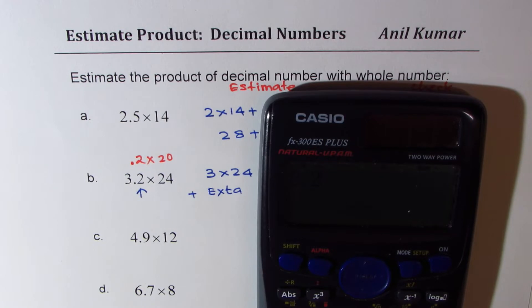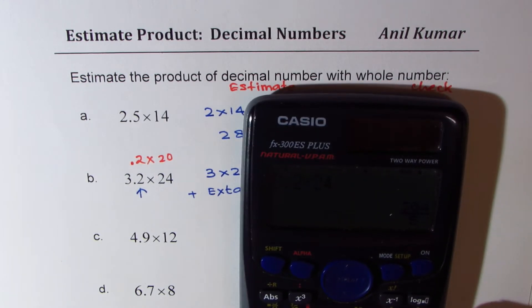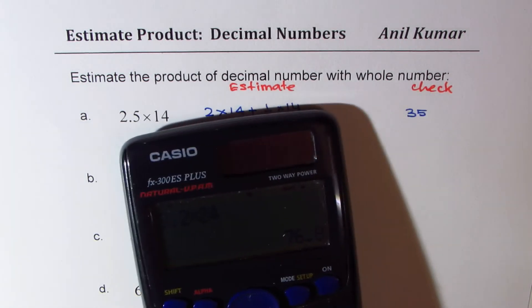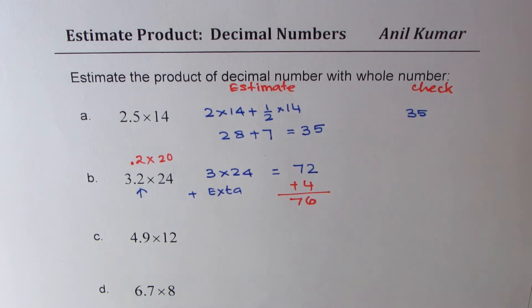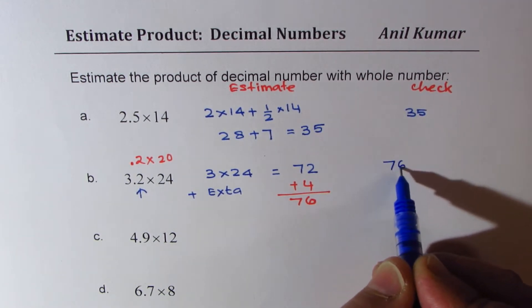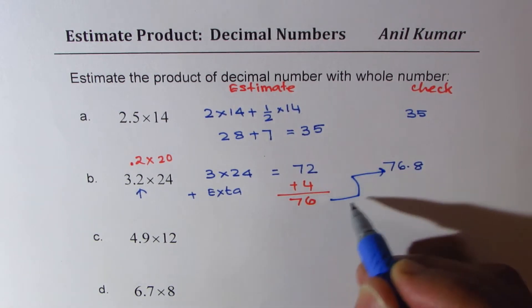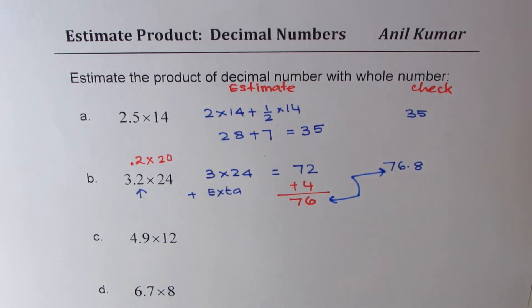Let us see how good this estimate is. 3.2 times 24, we get 76.8. So the answer here is 76.8. As you can see, these are fairly accurate.